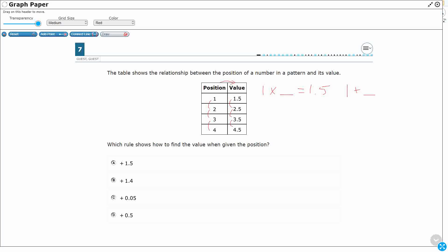1 plus something equals 1.5. Well, if we have to multiply something to get 1.5, it's going to end up being multiplying by a decimal, right?